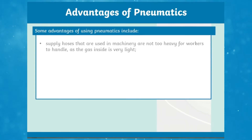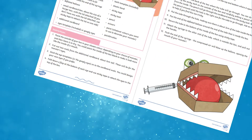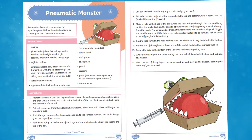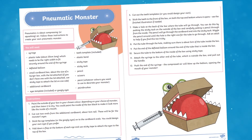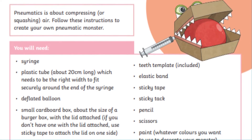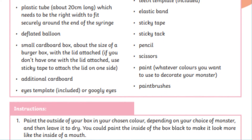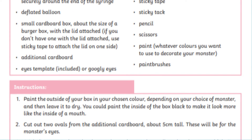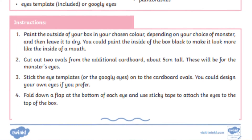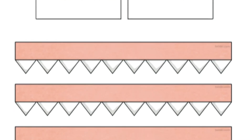If you want learners to practically engage with this concept, then try out this Upper Key Stage 2 Pneumatic Monsters activity. Simply follow the instructions displayed to create your own pneumatic monster. A list of resources needed is given, with straightforward step-by-step instructions and some monster cutout templates to add to your creation's design.